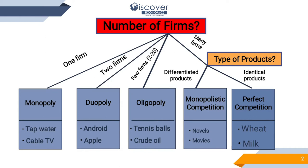Examples of monopolistic competition include written novels and movies. Every production house has different movies, and a person can identify which movie belongs to which production house. So this is the differentiation between monopolistic competition and perfect competition. These five — monopoly, duopoly, oligopoly, monopolistic competition, and perfect competition — are the types of market structures.